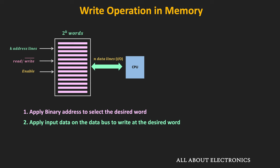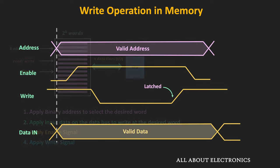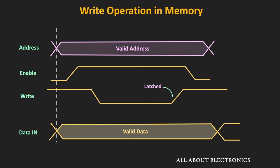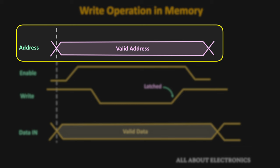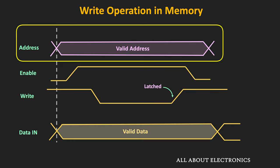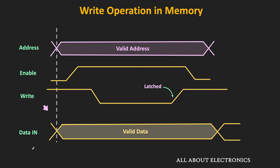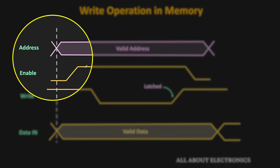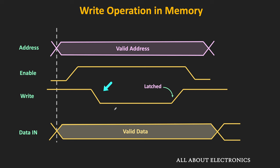Once the data is applied, the memory is enabled. Then the write signal is applied to the memory. Looking at the timing diagram for the write operation, first the valid address signal is applied, and similarly the data to be written is also applied to the data line. Once these signals get settled, the memory is enabled, and after some time the write signal gets activated.